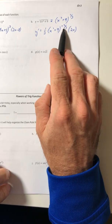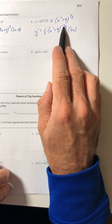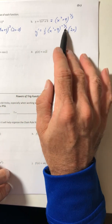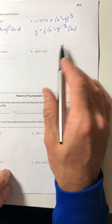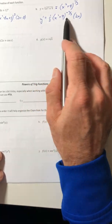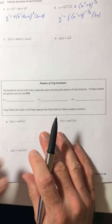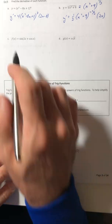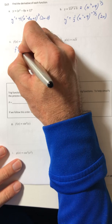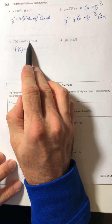Usually if the fraction has a numerator other than 1, I just leave it as is, because changing it back to a radical looks worse in my opinion. But you can do it if you want. If you leave it this way, you're done.